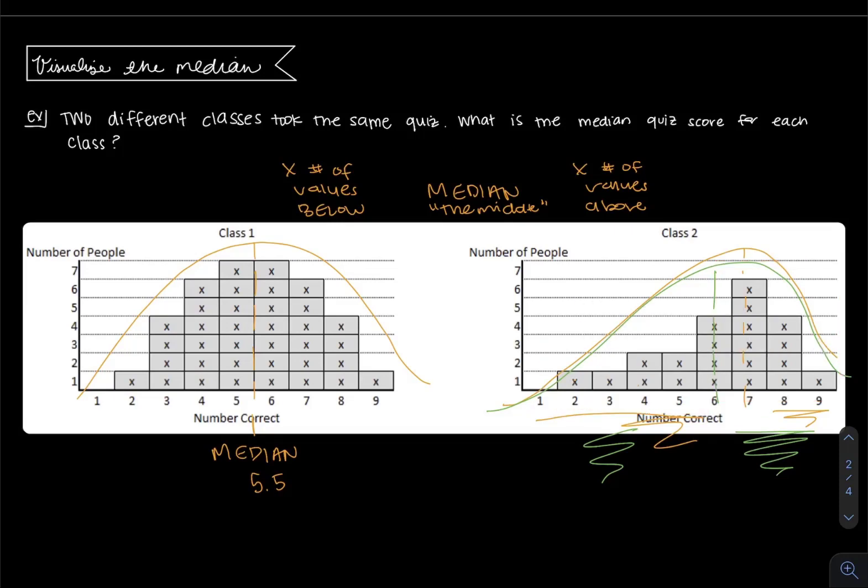So the median is somewhere between six and seven, but it's not perfectly in the center of six and seven like in class one. It's closer to six than to seven. In fact, it's actually 6.19 if you do the calculation.